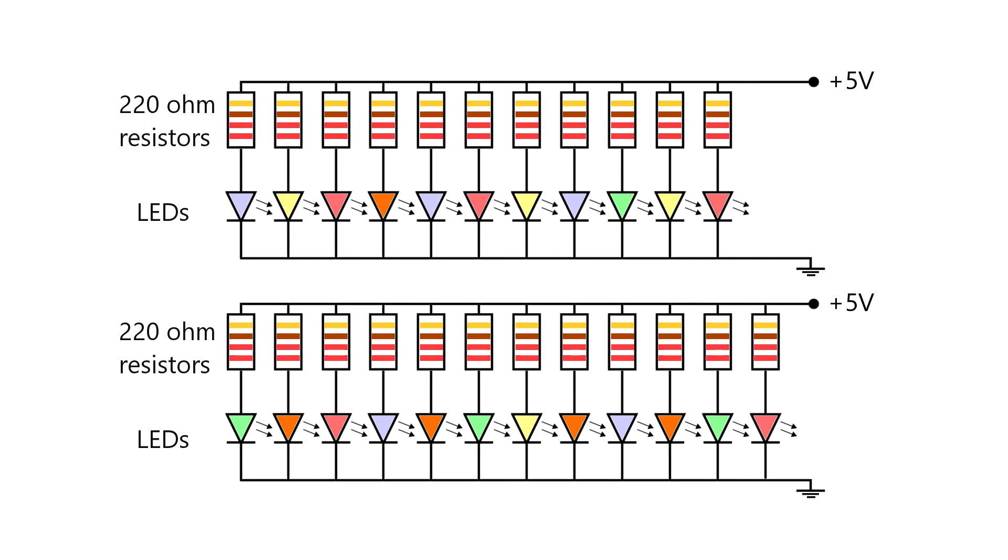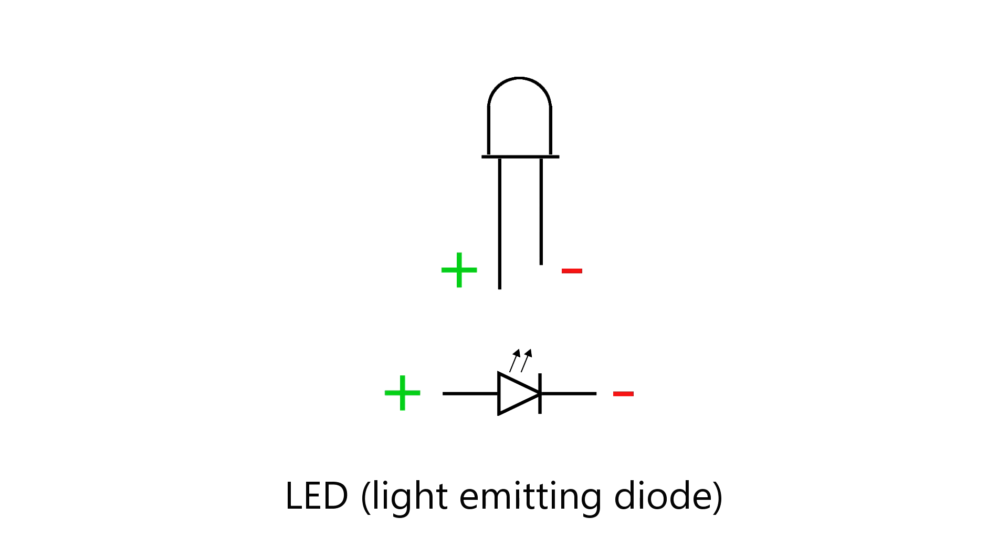To make things more interesting, I separated my LEDs into two groups, and each group was going to be controlled individually by the Arduino. Keep in mind that with LEDs you have to observe polarity. Unlike resistors, LEDs cannot be connected any way you want. The long leg always goes to positive, and the short leg goes to ground or negative.